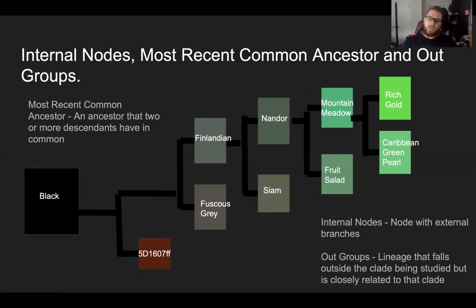Outgroups are taxa that fall outside of the clade being studied. In this case, those are Fuscus Gray, Siam, Fruit Salad, Caribbean Green Pearl, and 5D1607FF, because these don't have any branching groups that we are looking at.